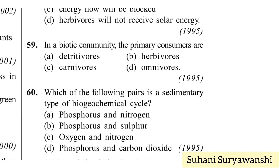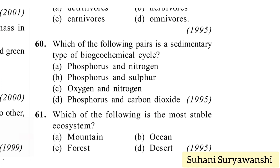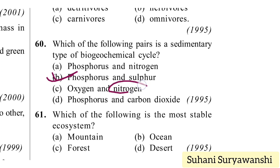In a biotic community, the primary consumers are herbivores, so the answer is option B. Which of the following pairs is a sedimentary type of biogeochemical cycle? Phosphorus and sulfur show sedimentary type biogeochemical cycles. Nitrogen and carbon dioxide show gaseous biogeochemical cycles. Answer is option B — phosphorus and sulfur.